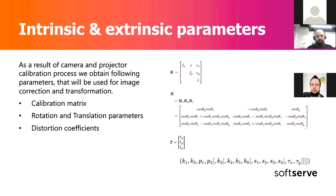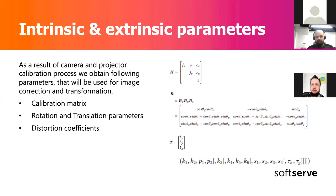One of the most important parameters for our method is the distortion coefficients, because the pinhole camera model doesn't take into account lens distortion. There are several distortions introduced — barrel distortion, pincushion distortion, etc. Fortunately, during calibration with the OpenCV calibration toolbox, the distortion coefficients are calculated: first using the ideal pinhole model, and then estimating the distortion coefficients, allowing us to undistort acquired images and correct images projected by the projector.